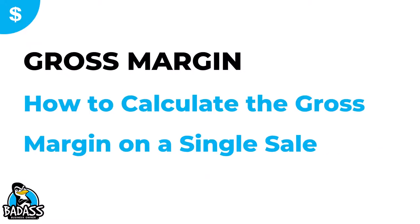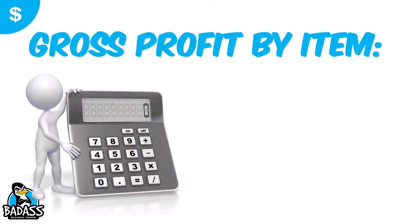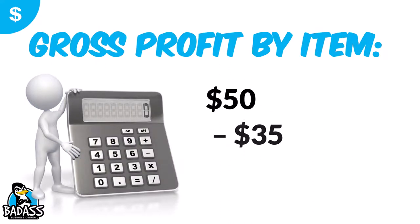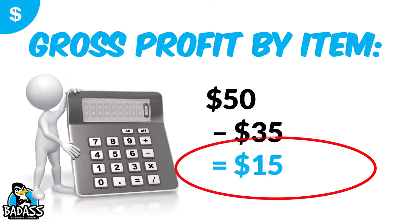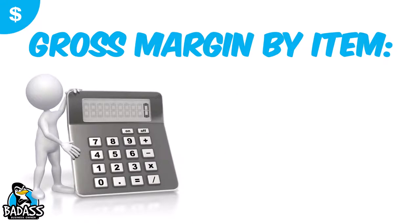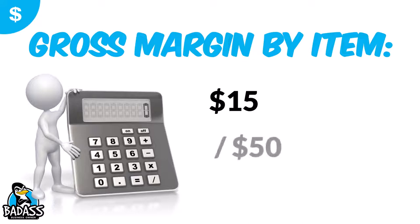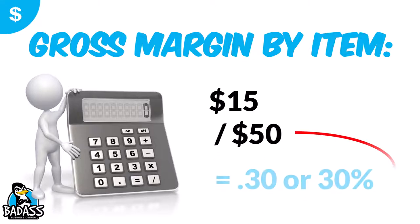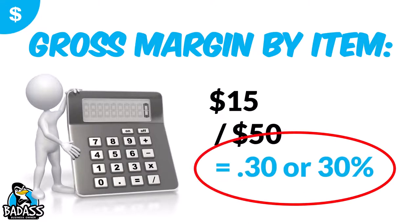Now what if we're looking at a single sale — a product or a service? We still take the sale, let's say $50, minus the cost of goods, which includes products and any labor hours, let's say $35. That leaves $15 for gross profit dollars. To figure out the gross margin percentage, we take that $15 of gross profit dollars, divide it by the sales of $50, and we get 0.30 — so the gross margin is 30%.